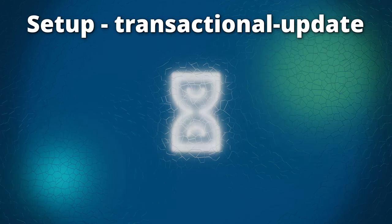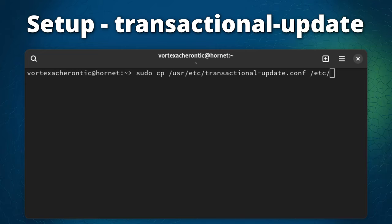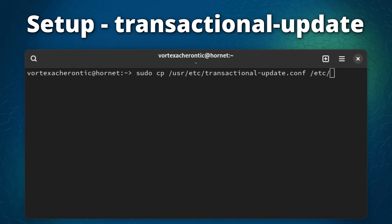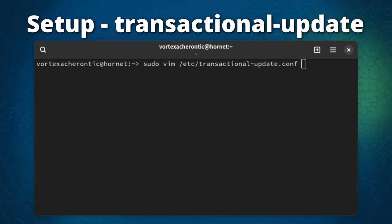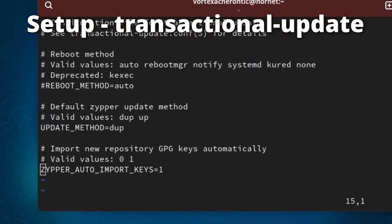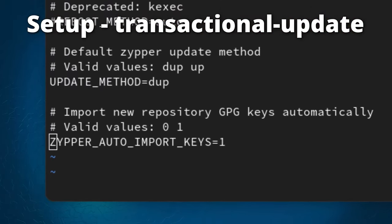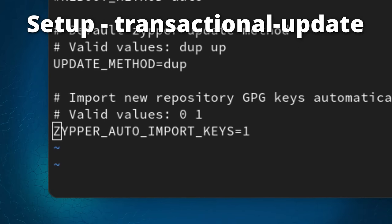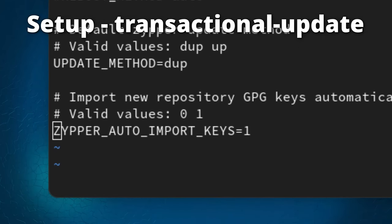To set up Transactional Update, open a terminal and copy the file from usr/etc/transactional-update.conf to /etc using: sudo cp /usr/etc/transactional-update.conf /etc. Then open the file with vim: sudo vim /etc/transactional-update.conf. Press i to enter edit mode, navigate to the line showing ZYPPER_AUTO_IMPORT_KEYS=0, remove the hashtag at the beginning of the line, and change the zero to a one. Press Escape then :x to save the file.